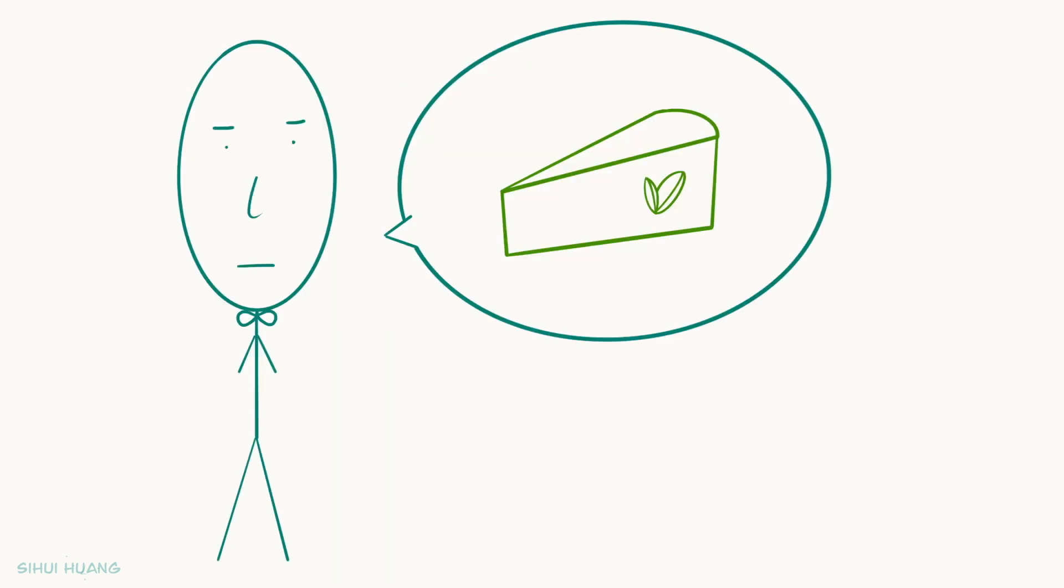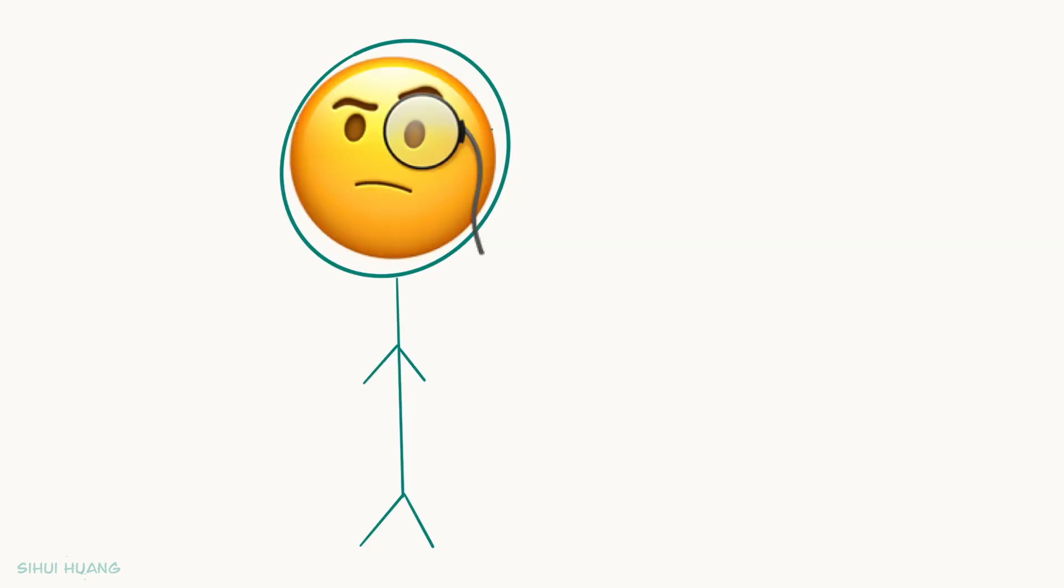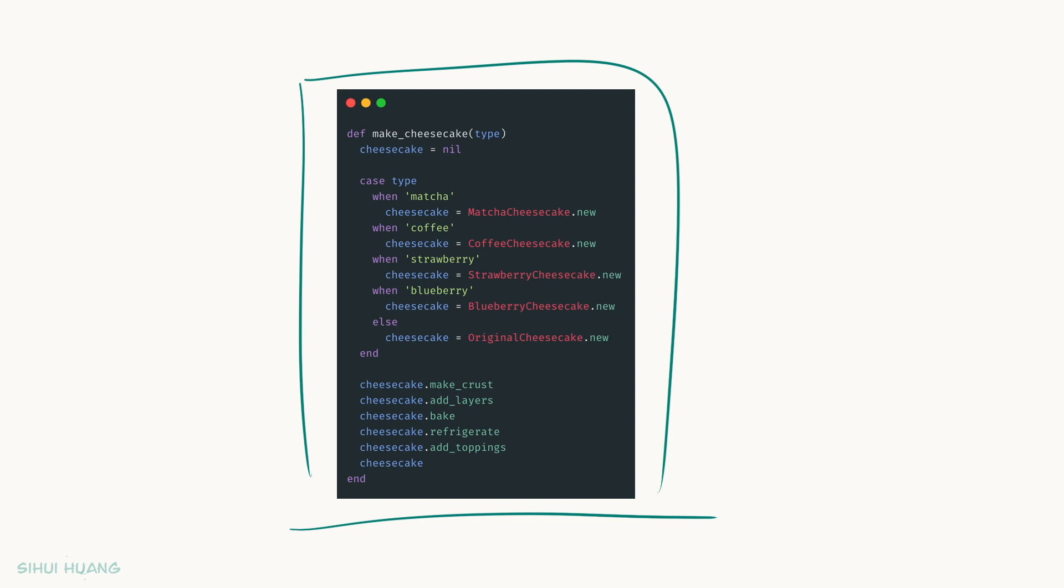A few days past, Kevin has another idea. How about matcha cheesecakes? Jeff thinks about it for a second and says, sure. I like matcha. And I can see it become popular. Let me go update the code to handle that as well. So Jeff once again updates the code. And now, if the cheesecake type is matcha, guess what? The code will use the matcha cheesecake class.